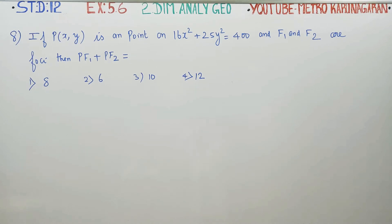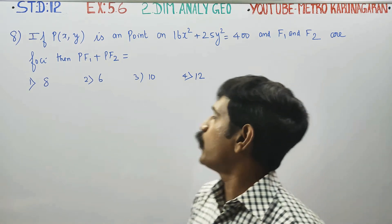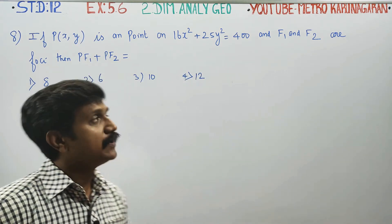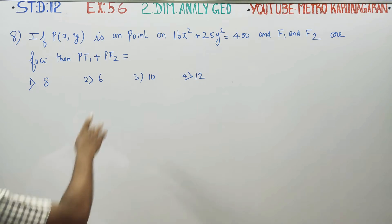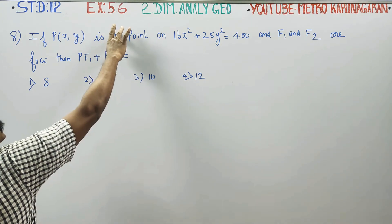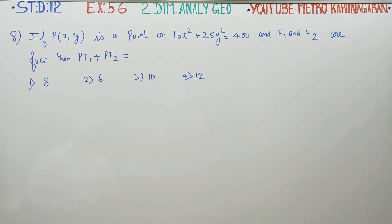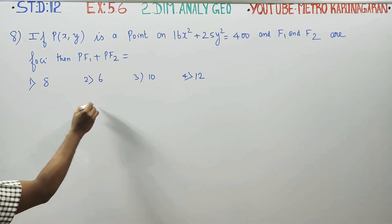Dear Tools Standard students, in exercise number 5.6, if P is a point on 16x² + 25y² = 400 and F1, F2 are the foci, then PF1 + PF2 is equal to?